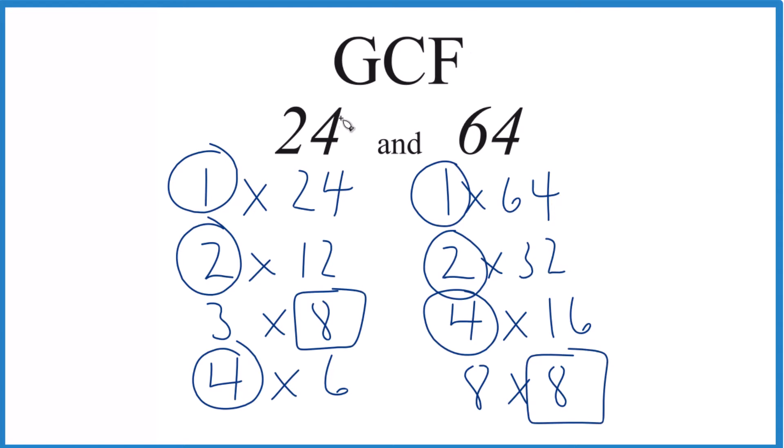So in answer to our question, the GCF for 24 and 64, that's 8. There are other ways you could do this, like prime factorization. But unless you have big numbers, this is probably easier.